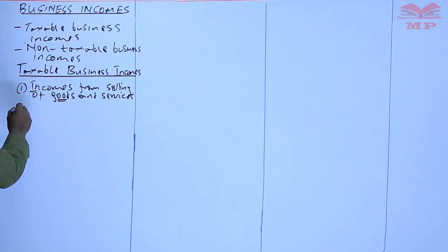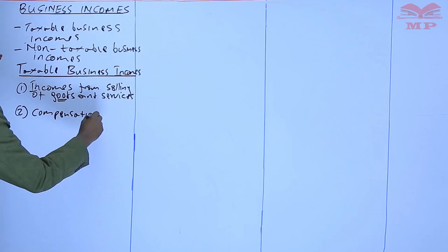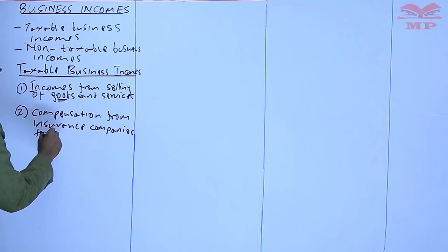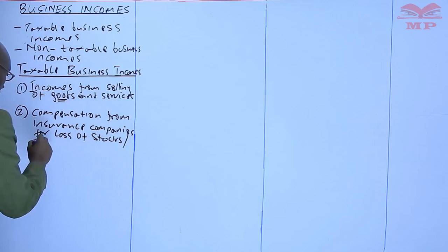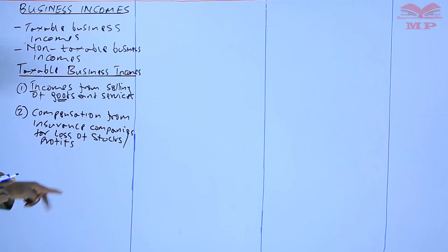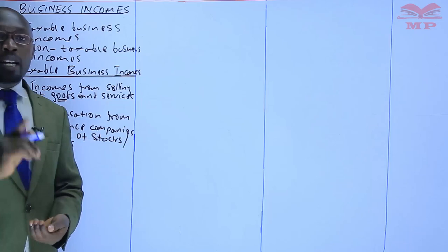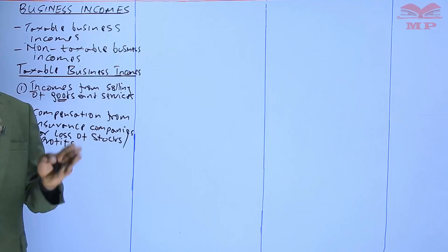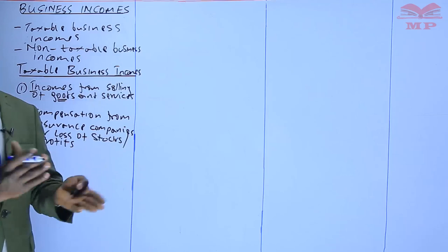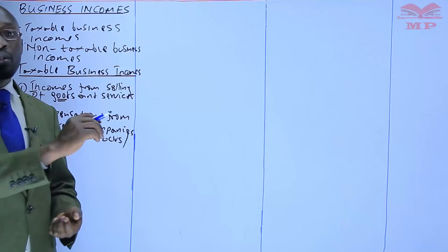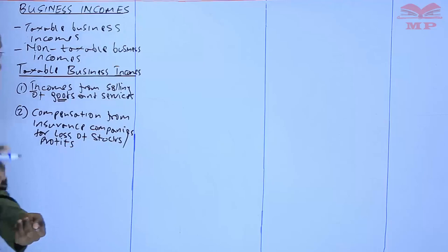The second taxable income is compensation from insurance companies for loss of stock or profits. Since income from selling goods is taxable because goods are what you deal with daily, sometimes you buy goods, put them in a warehouse, and thieves steal them or fire burns them. If you had insured those goods, the insurance company pays you the amount lost — and when you receive that, it is a taxable income.